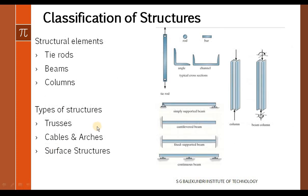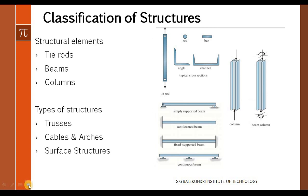Now, some classification of structures: the structural elements include tie rods, beams, columns, and many more — these are the very basic things. The types of structures you can have include trusses, cables and arches, and surface structures. I have included cables and arches because that will be the focus of the next video. You can see here some structural elements: a tie rod, a reinforcement rod or bar, angle, channel, an I-section column, a simply supported beam, cantilever beam, fixed support beam, and a continuous beam. Just a brief introduction about the classification of structures.